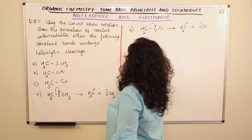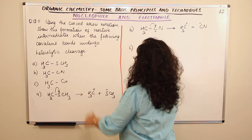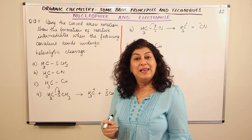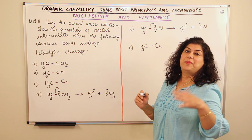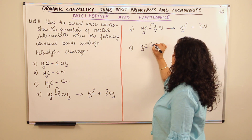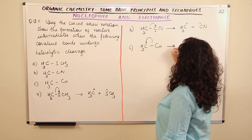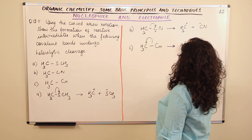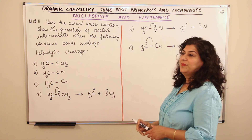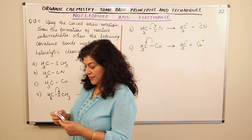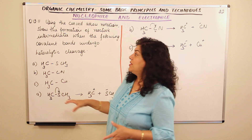Part C: CH3-Cu, where the bond is between carbon and copper. Copper is a metal and electropositive in nature, so it pushes electrons away from itself. Carbon is more electronegative than copper, so the arrow points towards carbon. The products are CH3⁻ and Cu⁺.